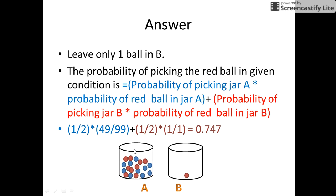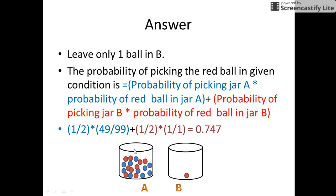So the probability to select red balls from jar A is 49 upon 99. To select jar B, the probability is 1 by 2, and the probability to select a red ball from jar B is 1 by 1, since there is only one red ball — the favorable case — in jar B. On solving, the probability now comes out to be 0.747.